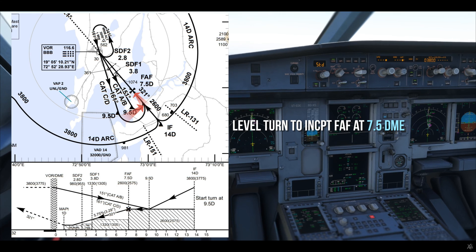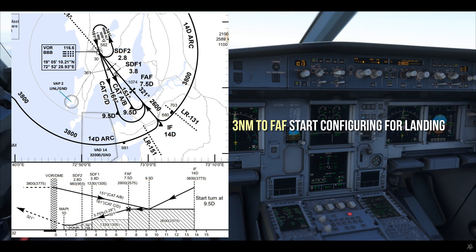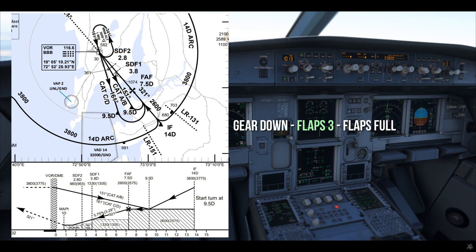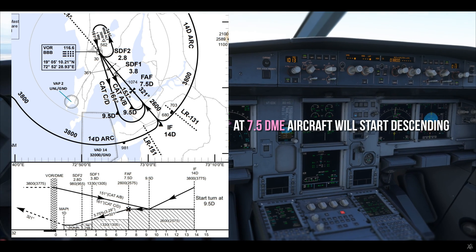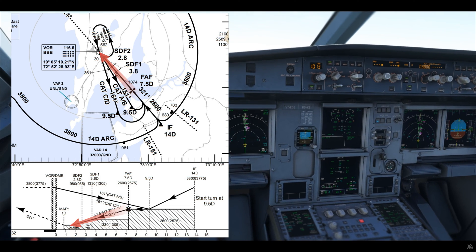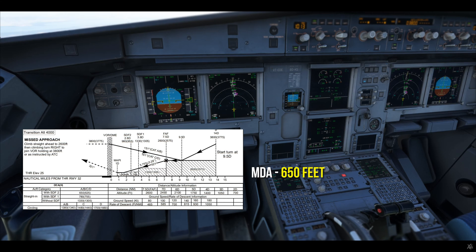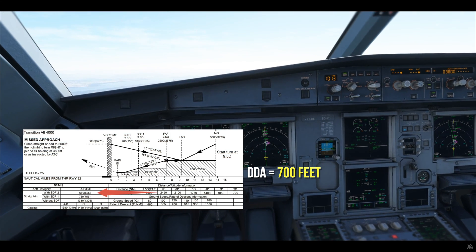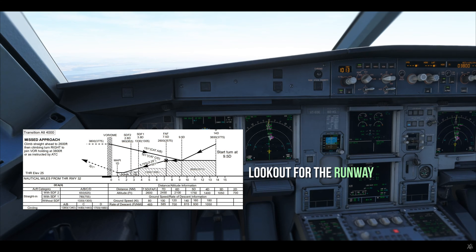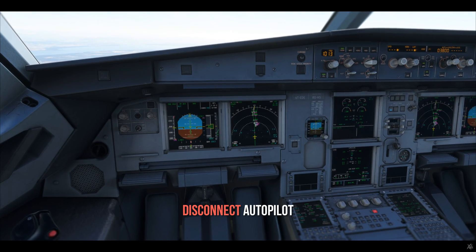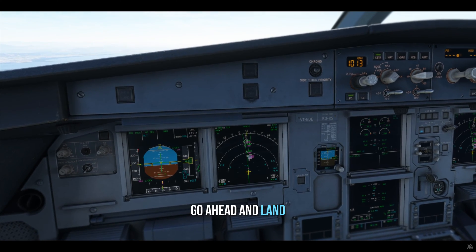At 9.5 DME there's a level turn to intercept the final approach course fix at 7.5 DME. During the turn you go flaps 2 and F-speed. Then three miles to the final approach fix you start configuring for landing: gear down, flaps, and hit the approach button on the FCU, just like you do for the ILS approach. At 7.5 DME the aircraft will start descending by itself. The moment it starts its descent, set the missed approach altitude, then do the height and DME cross-check all the way to your MDA, which in our case is 650. Add 50 feet for a non-precision approach to make it a DDA. At 100 feet above DDA — that is 800 feet — you will start looking out for the runway. At minimums, with the runway in sight, disconnect autopilot, put the FDs off, put the bird on, hit the runway track of 315, and land visually.